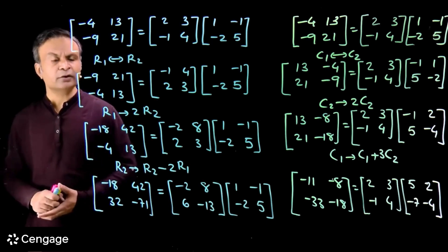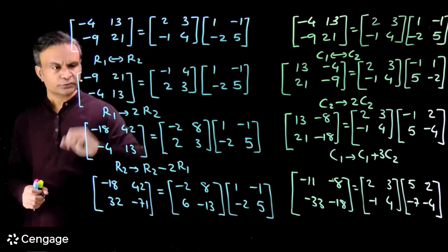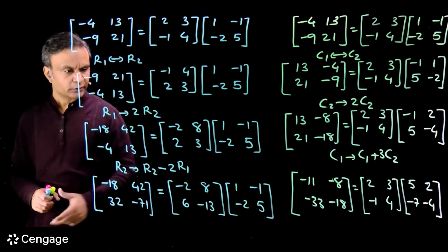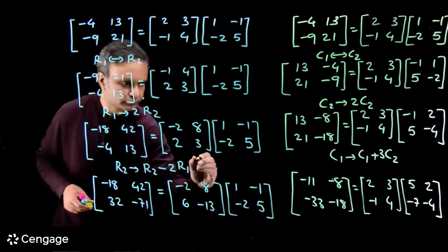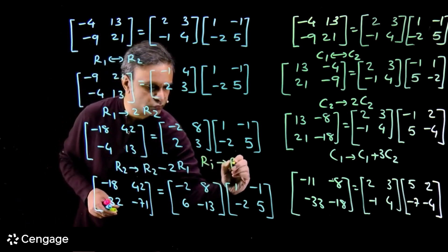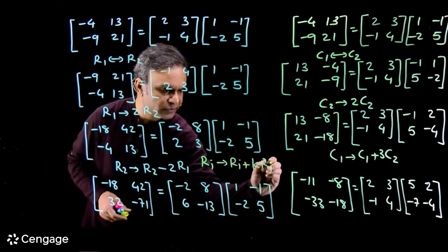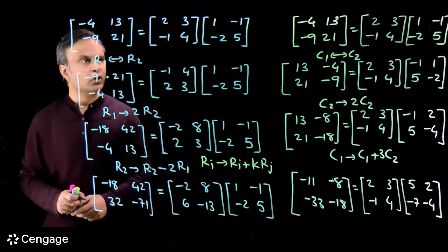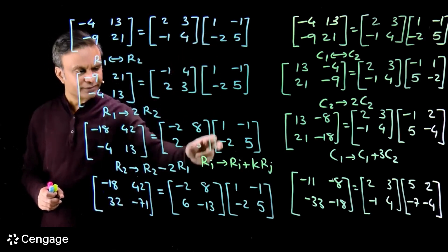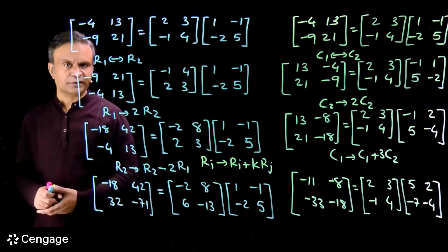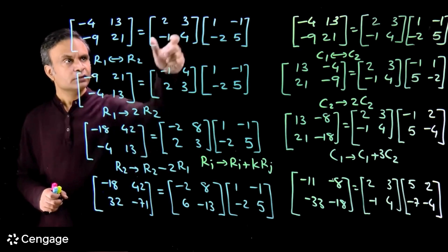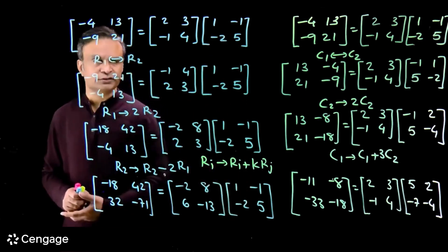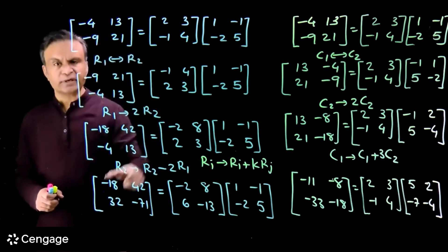So here we have three elementary row transformations: interchange of rows, multiplying any row with some constant, and doing this kind of operation where Ri changes to Ri plus K times Rj. After all these row transformations, the product of the RHS matrices equals the LHS matrix. On the RHS, the first matrix is transforming and the second matrix is intact — it does not change.